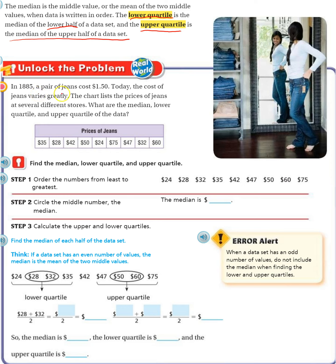In 1885, a pair of jeans cost $1.50. Today, the cost of jeans varies greatly. The chart lists the prices of jeans at several different stores. What are the median, lower quartile, and upper quartile of the data?